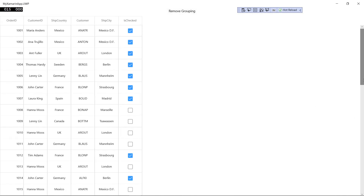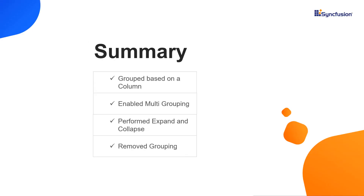That's it. Finally, let me summarize the main points. I explained the steps to configure grouping, enable multiple grouping, how to perform expand and collapse operations, and how to remove a group. You can download this working example from the GitHub link in the video description below. You can also check if you are eligible for our community license, which gives you a free license key to use our Xamarin products. If you found this video useful, click the like button and subscribe to our channel. Thanks for watching.